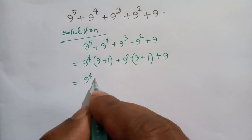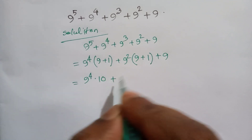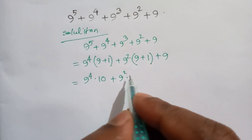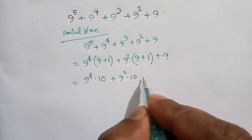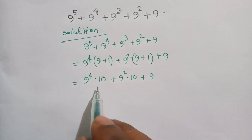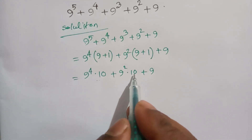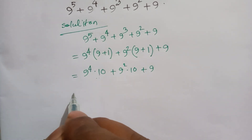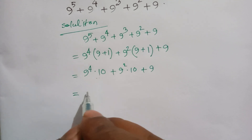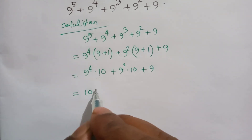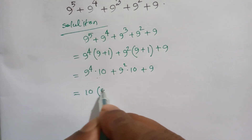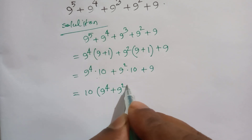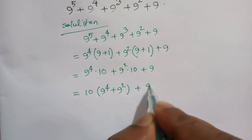So we get 9 to the power 4 times (9 + 1), which is 10, plus 9 squared times (9 + 1), which is 10, plus 9. Looking at these two terms, 10 is common, so we take out 10 as a common factor: 10 times (9 to the power 4 plus 9 squared), plus 9.